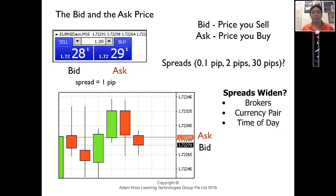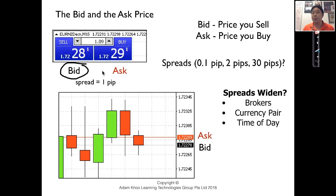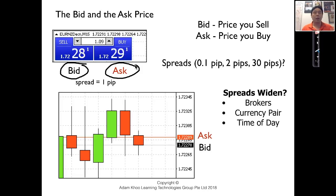You have to understand the bid-ask spread and how it affects placing orders in forex trading. Many people, when they look at the chart on the MT4 platform, think there's only one price — the price they see in the candlestick patterns. But the reality is there are two prices at any one time. The price you see on the chart is the bid price. What you don't see very often is the ask price, and the ask price is what causes much of the confusion. In forex trading, your limit and stop orders are triggered based on the bid and ask price, not the last transacted price.